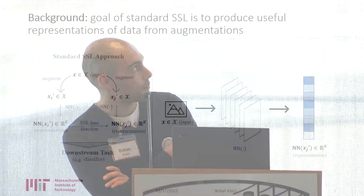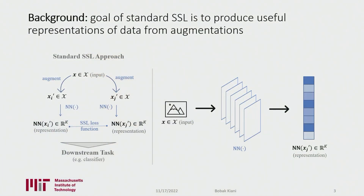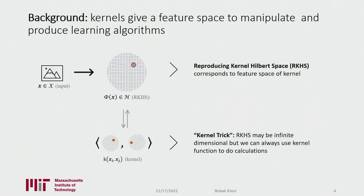Just to give a brief idea of how this works in deep learning: you have an original input, you produce two different augmentations or views of it, then push these through your neural network, and apply your loss function in the downstream task. Our goal is to take this whole idea and show that you can do a lot of the same techniques in the kernel regime.